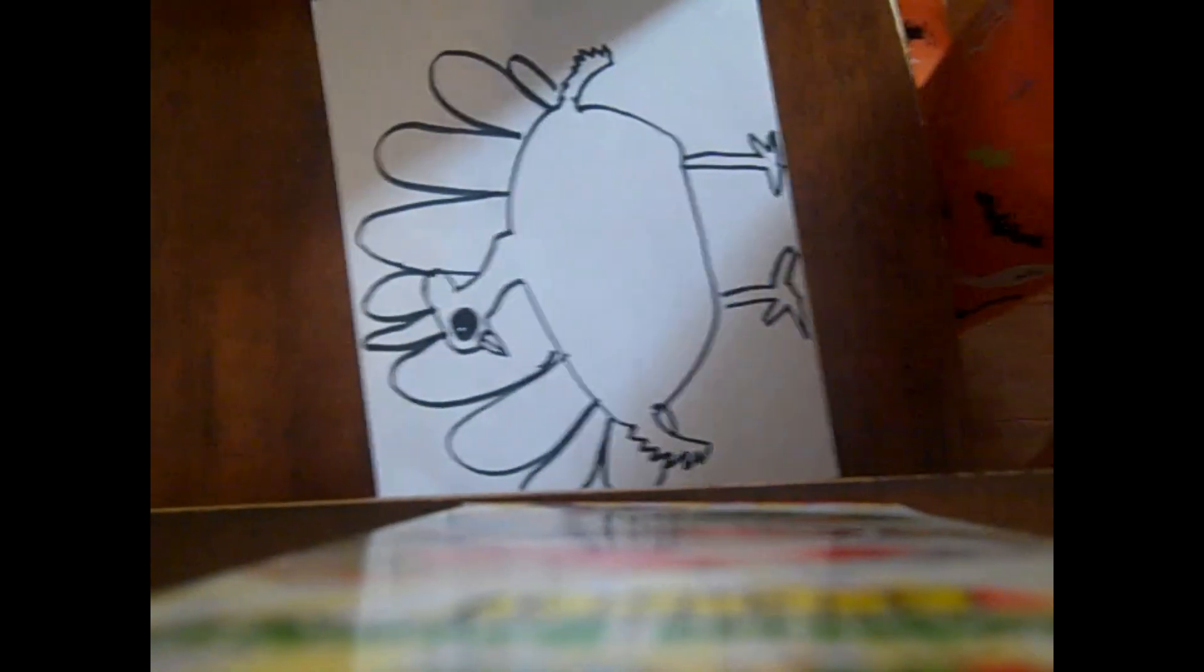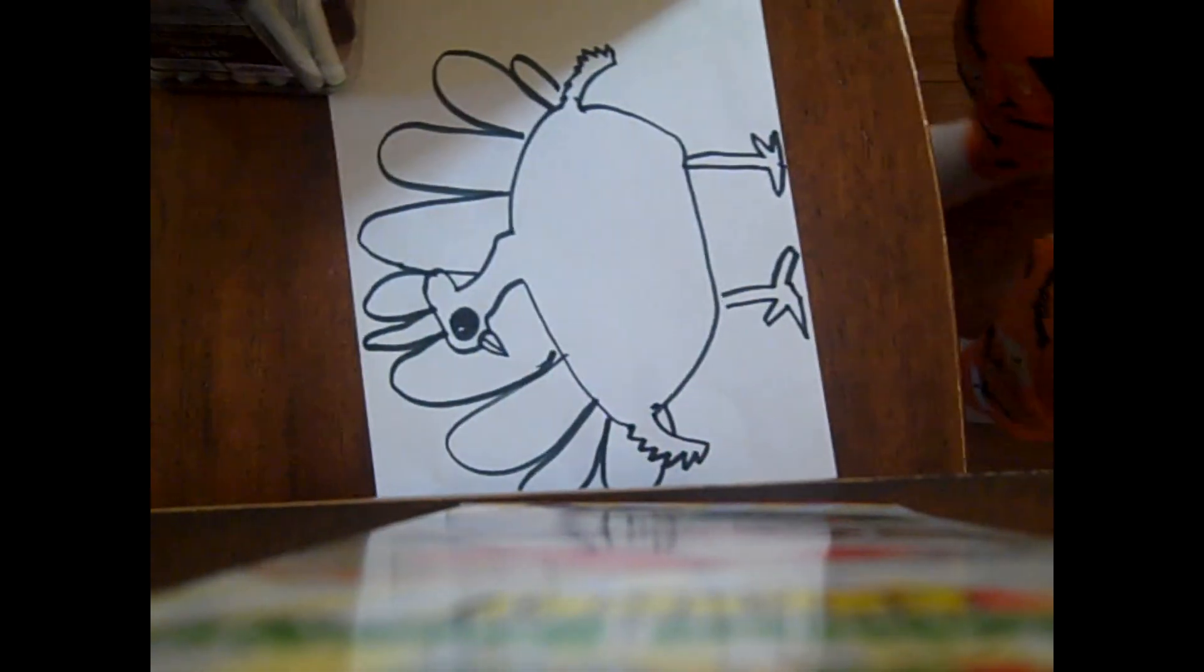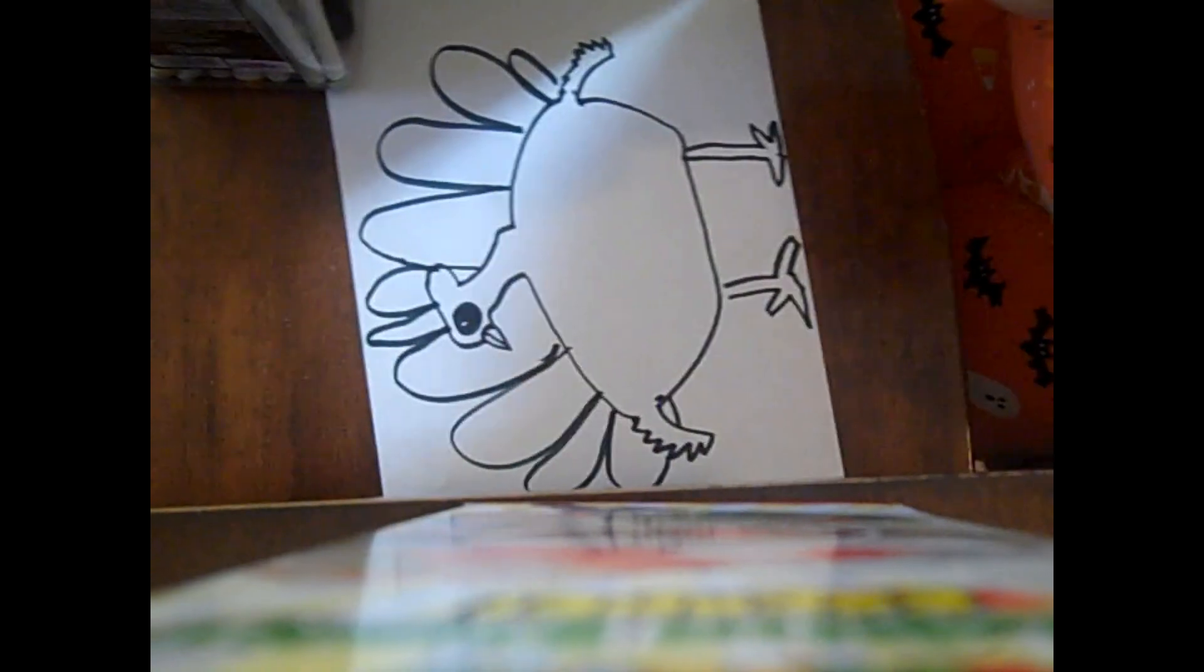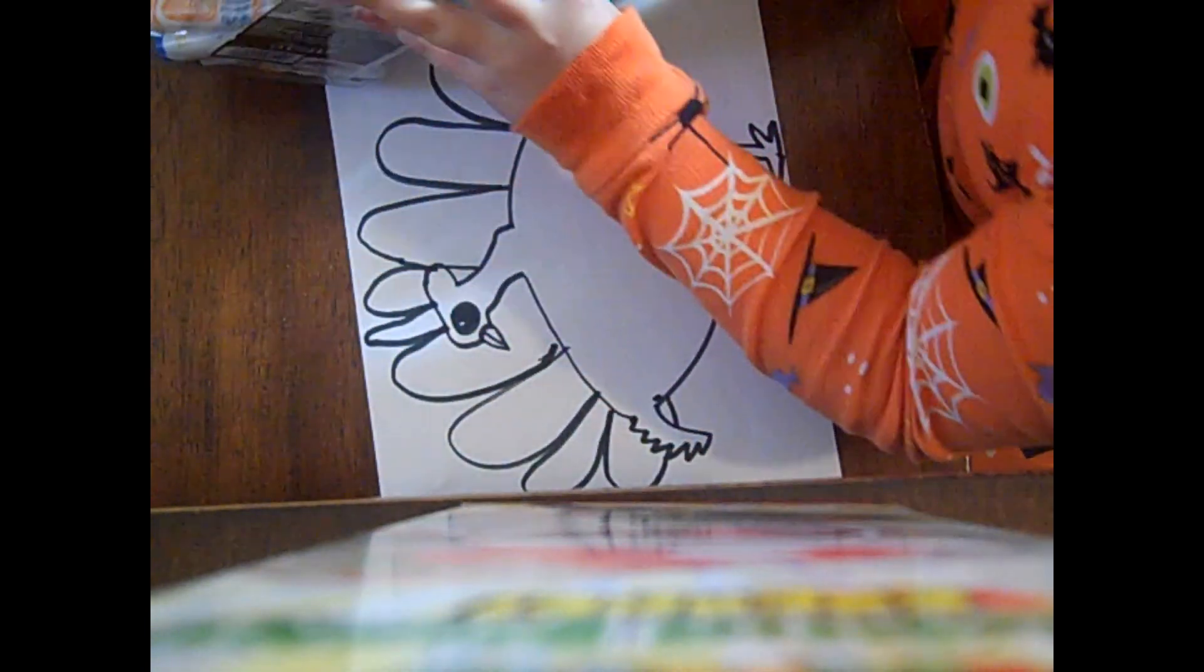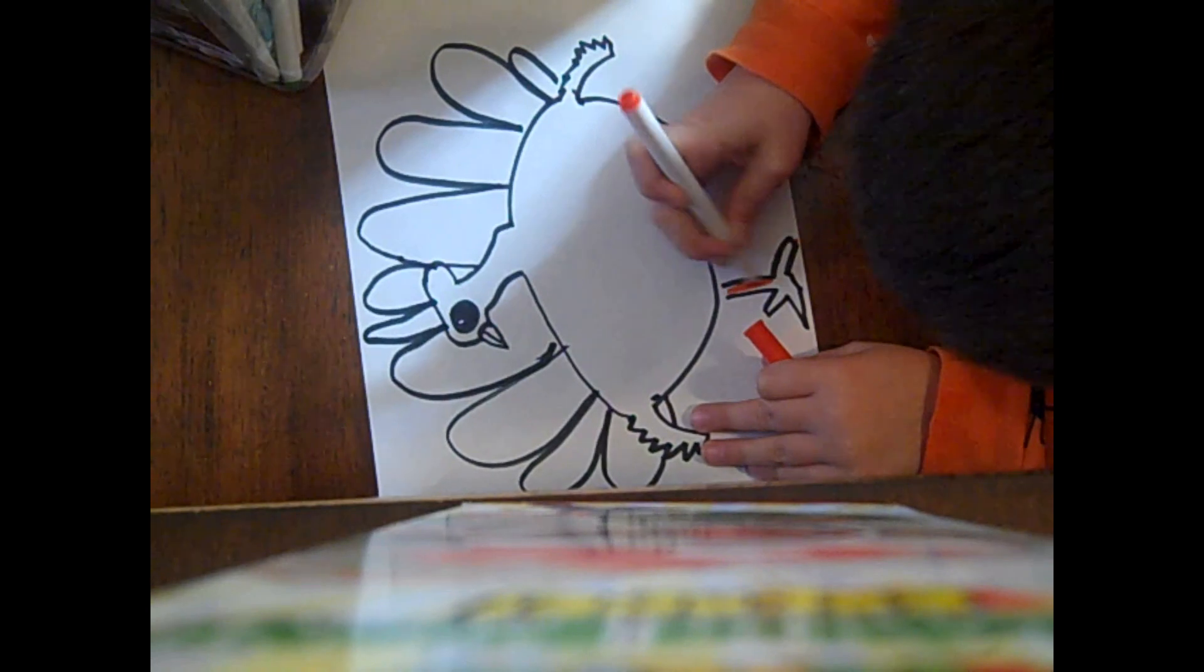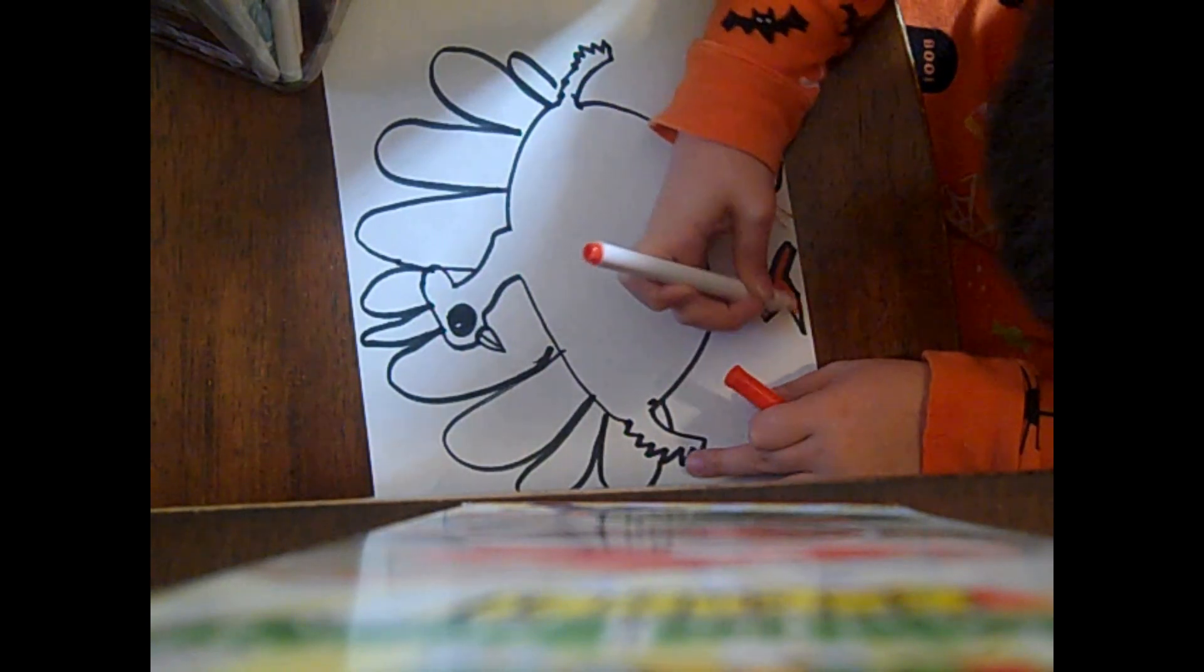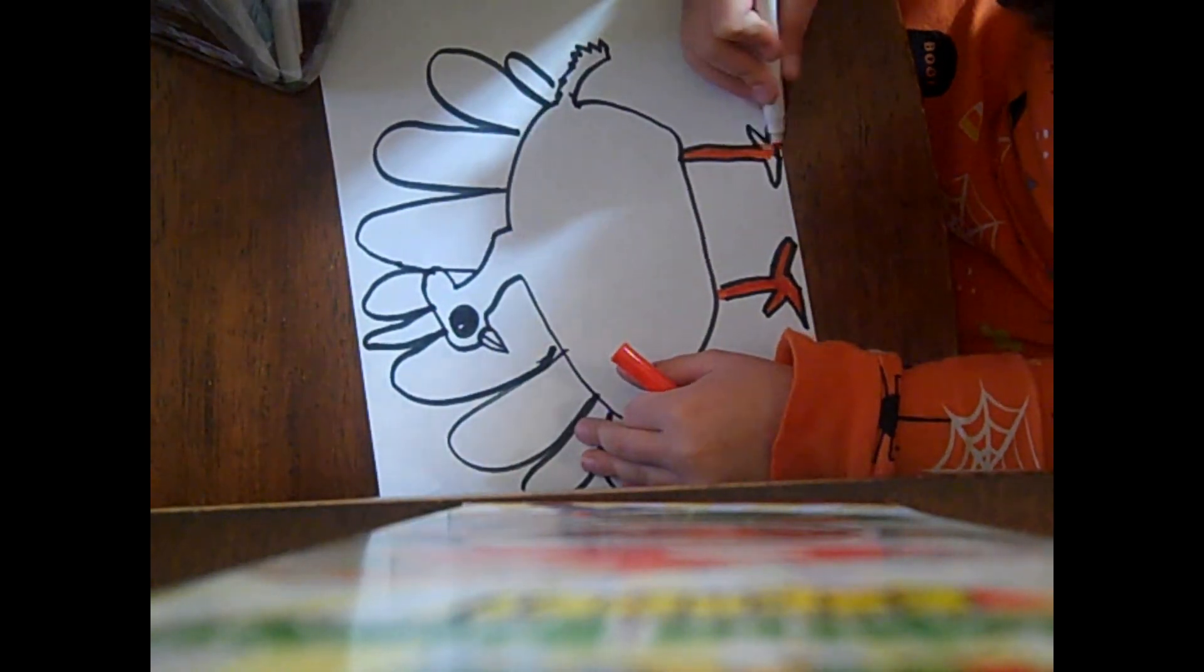And now I'm going to tell you how to color. So grab your markers or your pencil or your colored pencils or anything you're gonna color with and find your orange, and color in the feet and color in both of the feet once you're done.